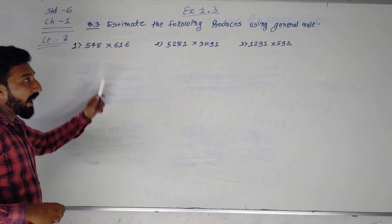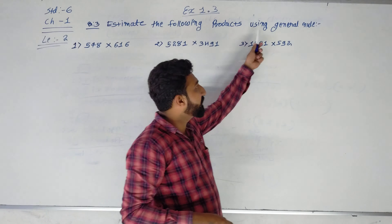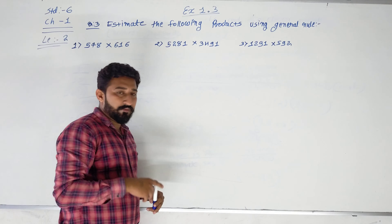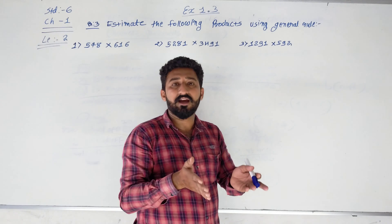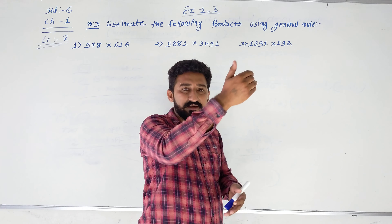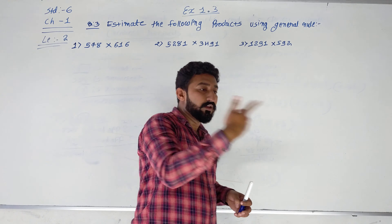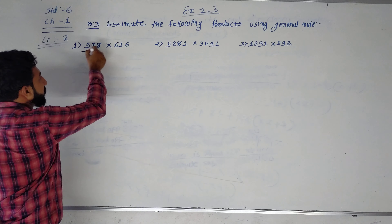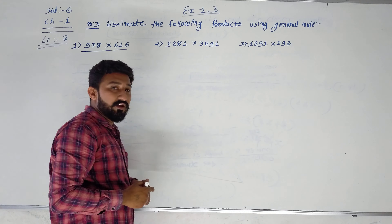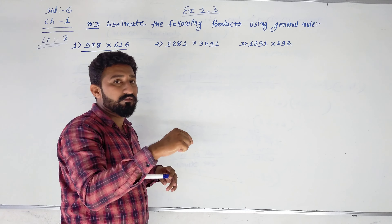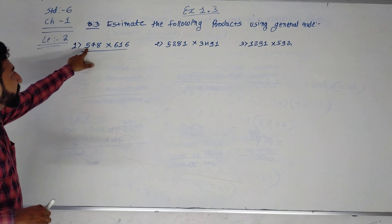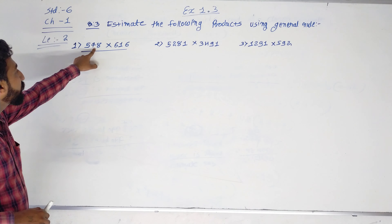Question number 3 is: estimate the following products using the general rule. Now we get the multiplication. We find the estimate value of the multiplication by using the general rule, getting the nearest value. We can see that 578 — this one's nearest round of value is 600.